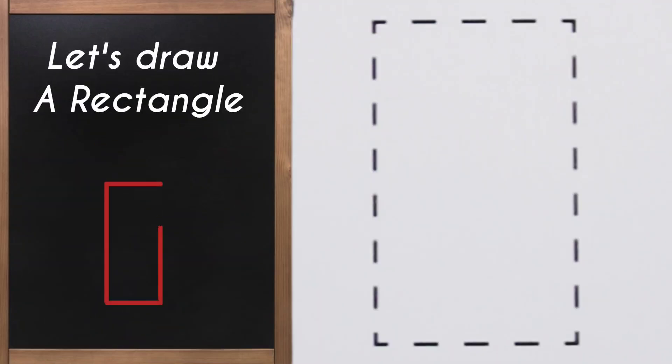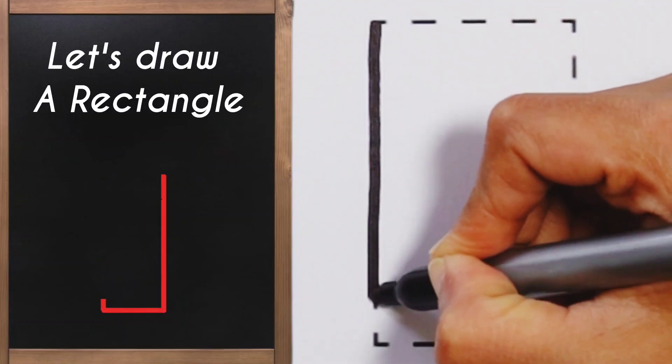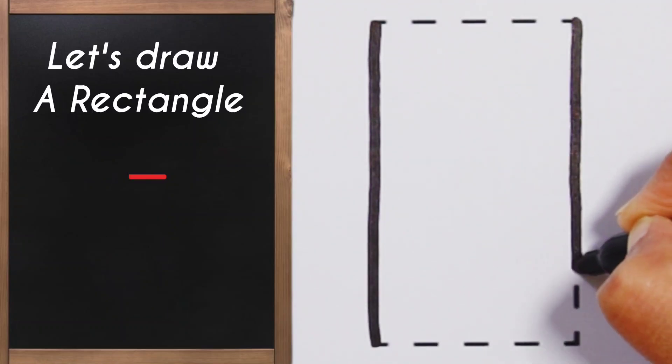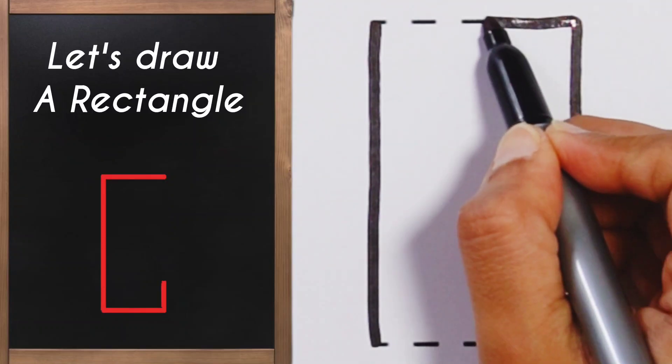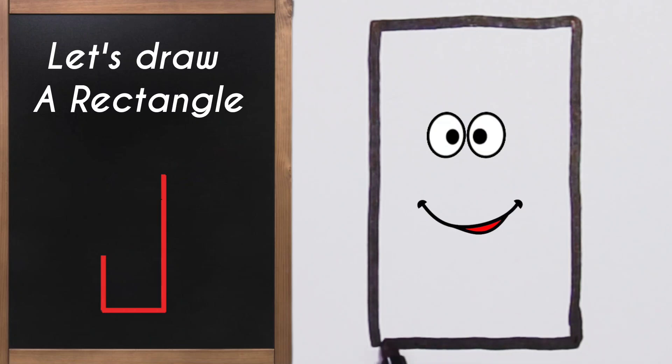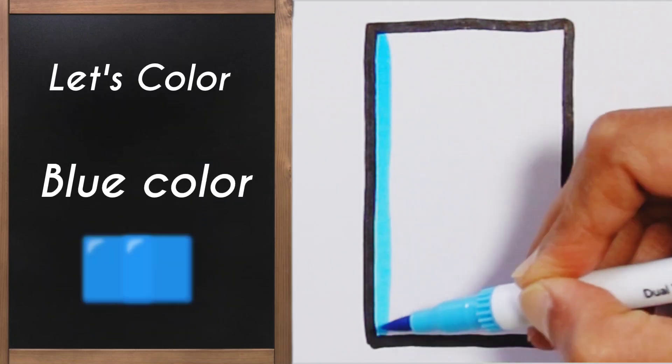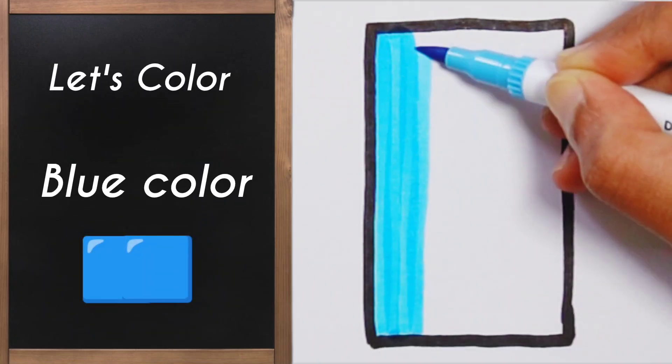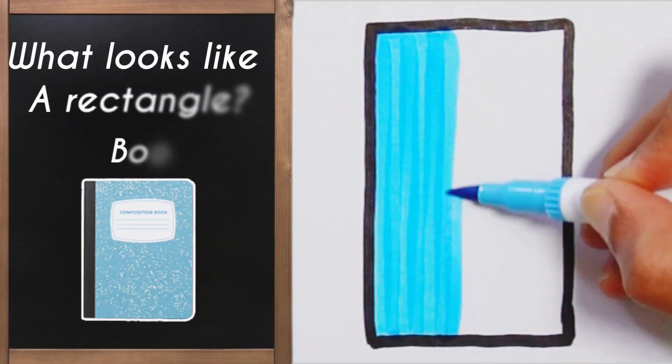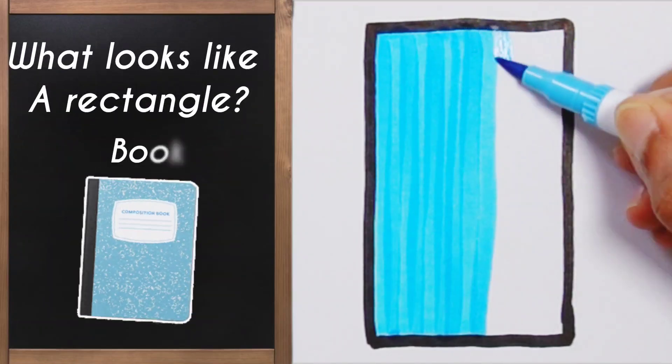Now let's draw a shape with two long sides and two short sides. Long, short, long, and short - it's a rectangle! What looks like a rectangle? A book, a mobile phone...